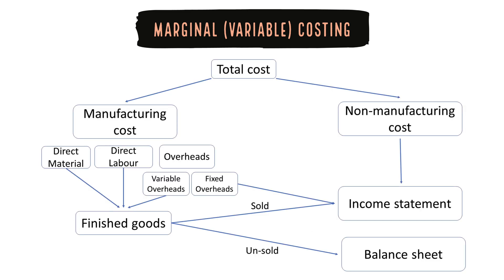Now the same thing is explained here in the form of a diagram. So in marginal costing, we start with the total cost and split the total cost into manufacturing cost and non-manufacturing cost. All the non-manufacturing costs are charged directly to the income statement in the period in which they are incurred.